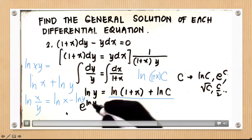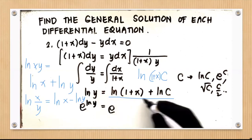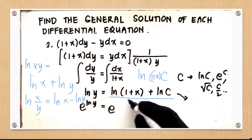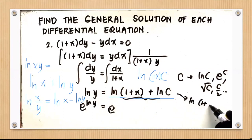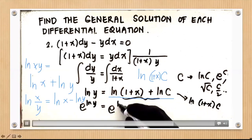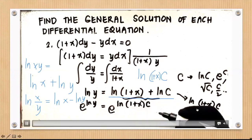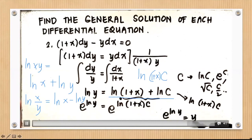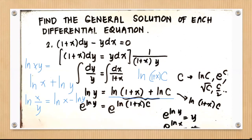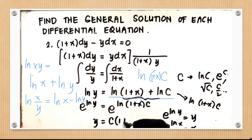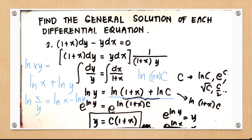Applying anti-ln to both sides: since e^(ln y) = y, we eliminate ln on both sides. The result is y equals c(1 + x). That is the general solution, simplified using logarithmic properties. The arbitrary constant c can represent any value, so ln c is still just another constant c.